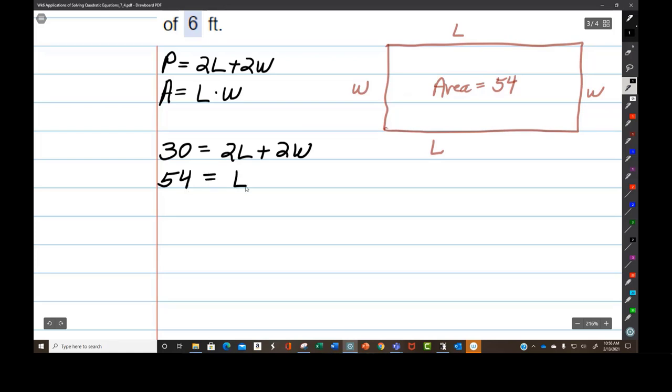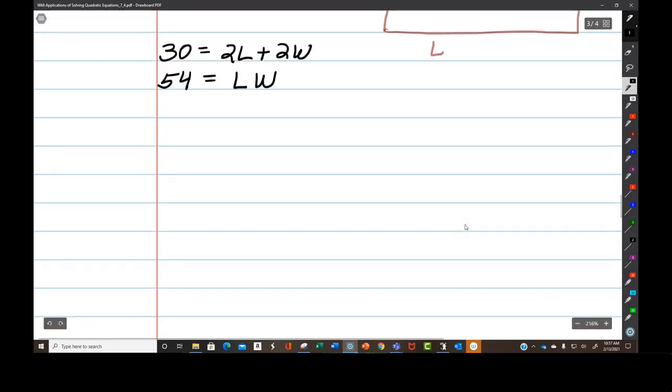Here's what we've got. 30 equals 2L plus 2W, and 54 equals length times width. Well, this is what we're going to have to do when you end up with a problem like that. Because they don't tell us what the length and the width are. We're going to substitute either for L or for W. We're going to use this easier equation to do it, and then we're going to pop it in here.